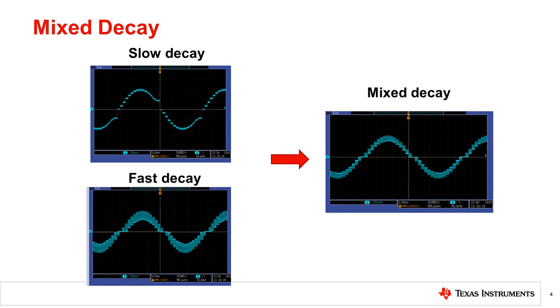With mixed decay, you can get benefit from both fast and slow decay: small current ripple and bring winding current down fast enough. With an optimized fast decay percentage, the winding current can quickly be regulated near the ideal current level.